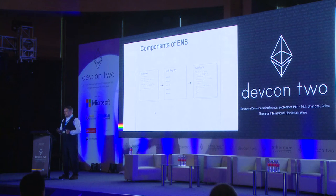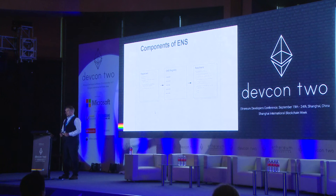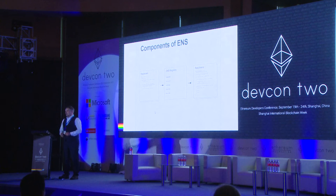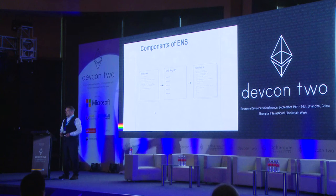These are the three main components of the ENS. We have the ENS registry, which is a centralised contract that contains the entire name tree. It's the only component of the system that isn't upgradable because it's extremely simple, and its job is simply to map from the name you enter into the resolver.